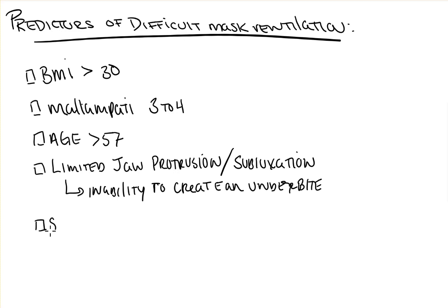Next is snoring, or patients with known sleep apnea. This often indicates excess or redundant oral tissue or a large tongue that may collapse under general anesthesia and obstruct the airway when relaxed.